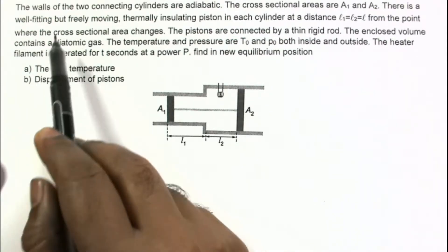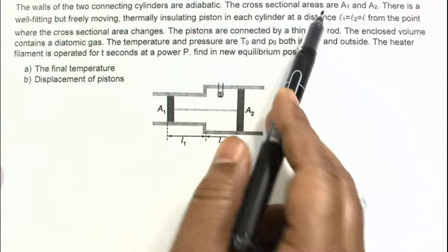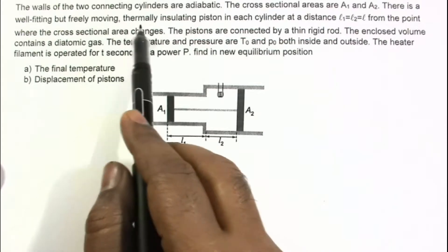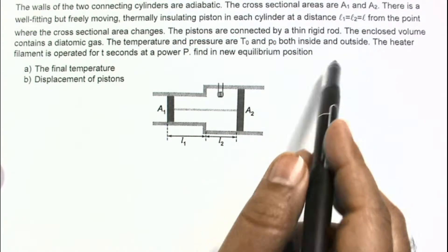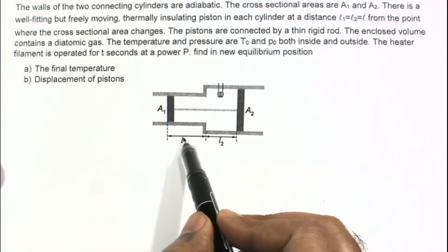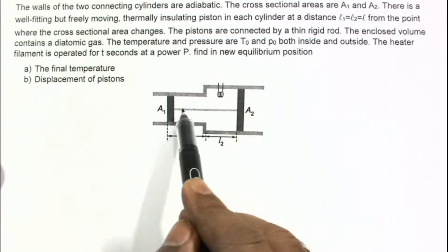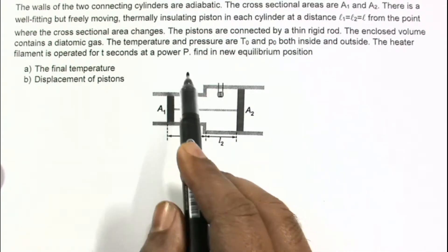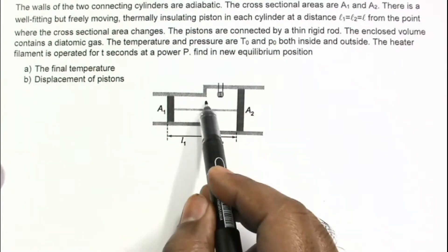In the problem, the walls of the two connecting cylinders are adiabatic. The cross-sectional areas are A1 and A2. There is a well-fitting but freely moving thermally insulating piston in each cylinder, at a distance L1 equal to L2 equal to L from the point where the cross-sectional area changes. The pistons are connected by a thin rigid rod, and the enclosed volume contains a diatomic gas. The temperature and pressure are T0 and P0 both inside and outside.